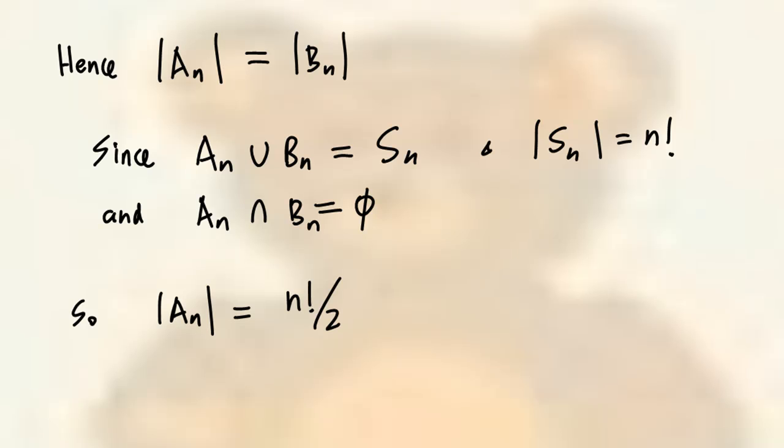Therefore, the order of A n and the order of B n is the same. Since the union of A n and B n is S sub n, and A n and B n are disjoint, and the order of S n is n factorial. Therefore, the order of A sub n is n factorial over 2. And that finishes the proof.